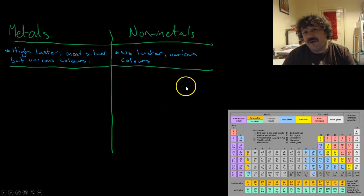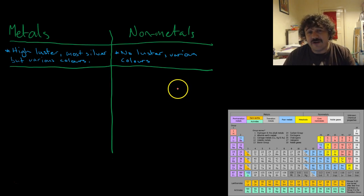Metals have a high luster. They're mostly silver in color, but you do have varying colors. Gold's obviously gold-colored, titanium tends to be pink, cobalt is blue, copper is a reddish color, but mostly they're silvery metals.